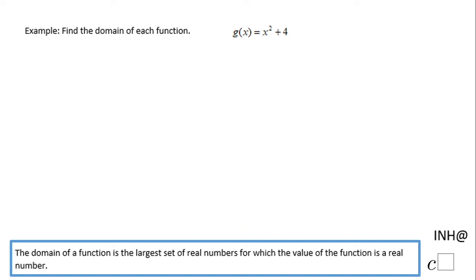Welcome back to I Need Help at C Squared. In this example, we need to find the domain of the function g(x) = x² + 4. The domain of a function, if it's not given to you, is the largest set of real numbers for which the value of the function is a real number.